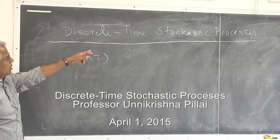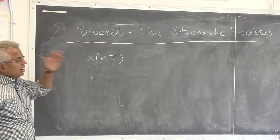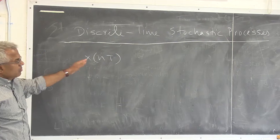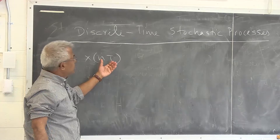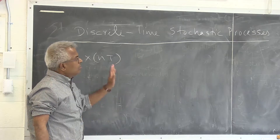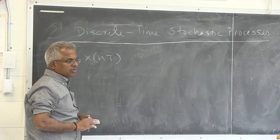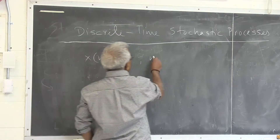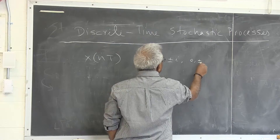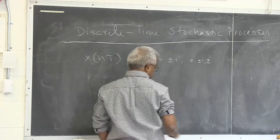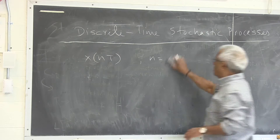Discrete-time stochastic processes are where the time is obviously discrete. As I have written, it uses multiples of t, but it could be sampled at arbitrary time instances too. Stochastic processes are defined for integer values, both positive and negative.